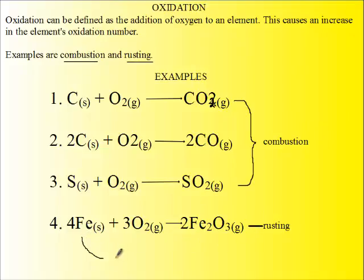Rusting is where iron reacts with oxygen to form the oxide of the iron. So in each case, after oxidation, the oxide of that element is produced.